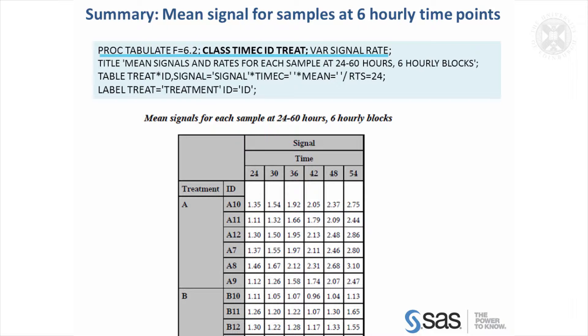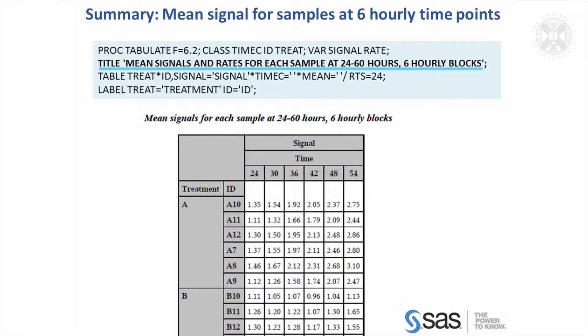This class statement gives the categorical effects we're going to be summarizing by in the table. The VAR statements are the things that we're summarizing, the actual continuous variables which here are signal and weight. The title statement, you just add that in and give your title. Here we've just got one title but you could have a list of I think up to about 10 titles and footnotes to go under the table as well.